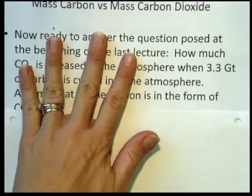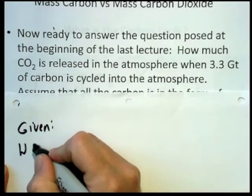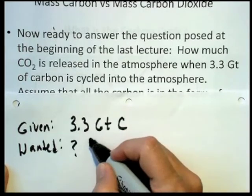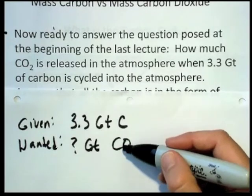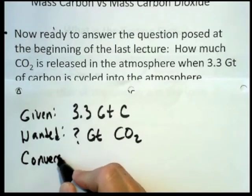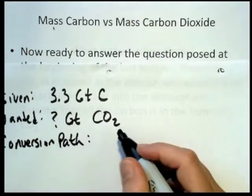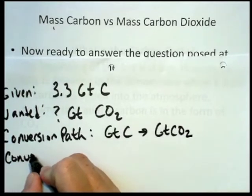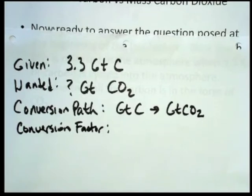I'm going to put a fresh piece of paper up here so we have plenty of space. What you want to do first of all is look at the question. You want to always say what's given and what's wanted. In this particular question, what's given is 3.3 gigatons of carbon. And what we want to know is how many gigatons of carbon dioxide does that relate to, assuming that all the carbon in the 3.3 gigatons is bound in the form of carbon dioxide. So we're going to have to just do a conversion. The conversion path is going to be from gigatons of carbon to gigatons of carbon dioxide.